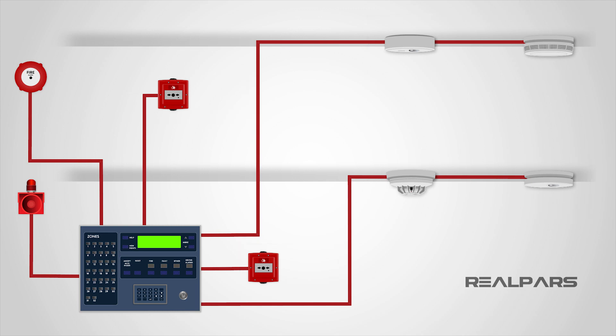The control panel is wired to a minimum of two sounder circuits, which could contain bells, electronic sounders, or other audible devices. It is these devices which sound the alarm when triggered.